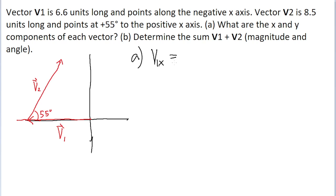We don't need to break it up into sines and cosines because it only exists along one of the axes. Its x-component is negative 6.6 units. Similarly, for v sub 1y, the y-component of vector 1, we can see from our diagram there is no component in the y-axis, so v sub 1y is 0 units.